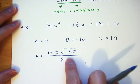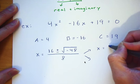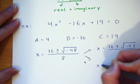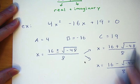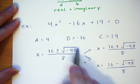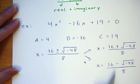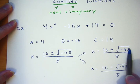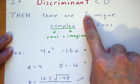Breaking this into two pieces: x equals 16 plus the square root of negative 48 over 8, and x equals 16 minus the square root of negative 48 over 8. This simplifies to 2 plus or minus the square root of negative 3, over 2. These two solutions are different from each other, which is why we say we have two unique solutions.